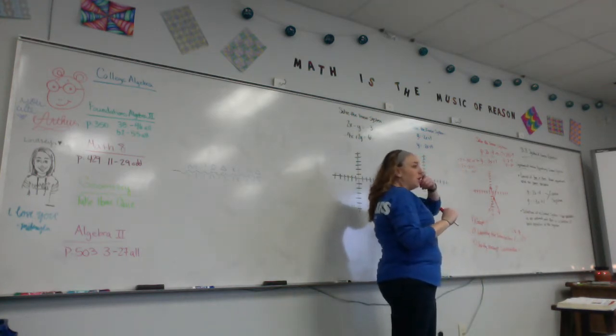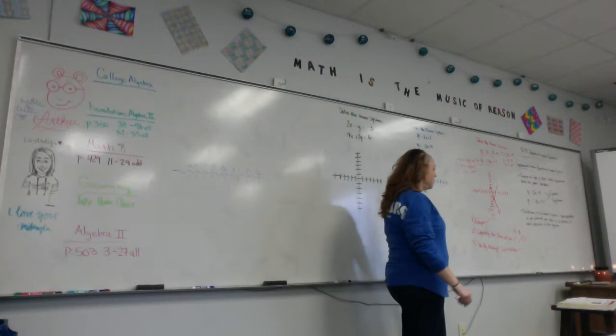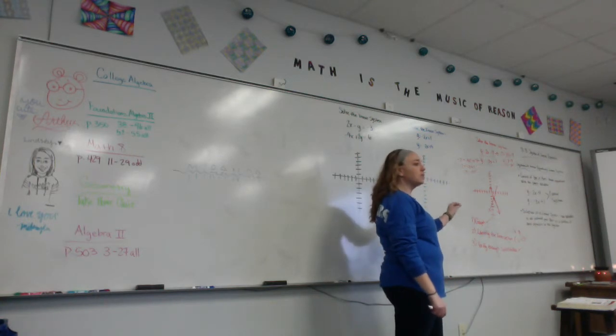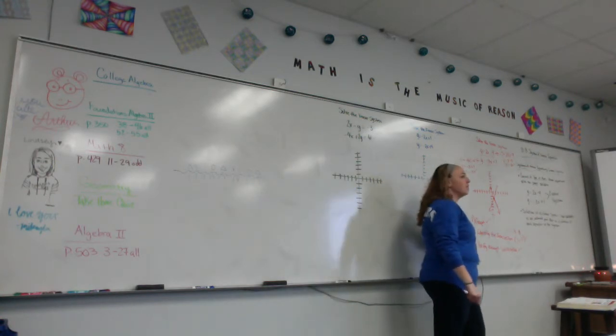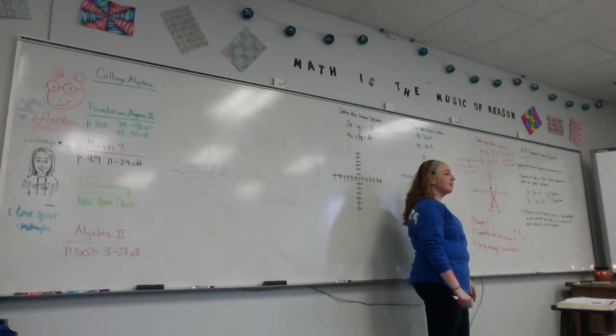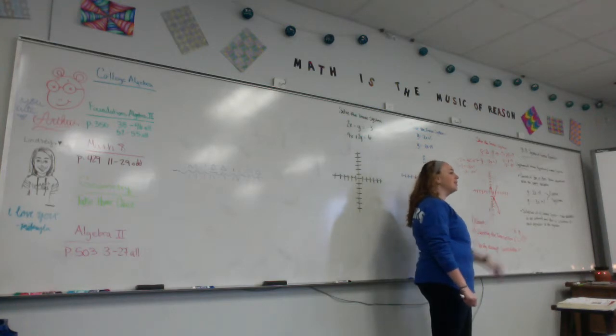Wait, so what do we plug in the 1? The x. And you plug the negative 2 into the y. That's all you do. So you graph it, identify the intersection, verify it.